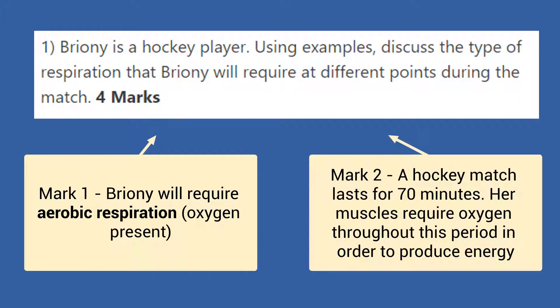We now need to give an example and explanation. You could simply put that a hockey match lasts for 70 minutes — or if you've put a hockey match lasts for a long time, that would be okay as well. Your explanation is that her muscles require oxygen throughout this period in order to produce energy. If you said there was going to be a lot of low-intensity jogging during this 70-minute period, that would also be acceptable for the mark.